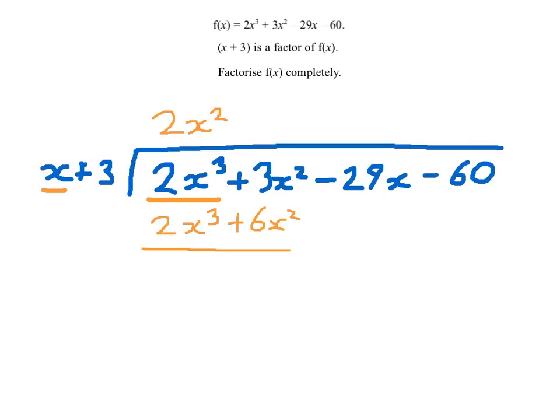And now I'll subtract. You can see here I have 2x cubed take away 2x cubed is 0. It always will be. And 3x squared take away 6x squared, and that gives me minus 3x squared.